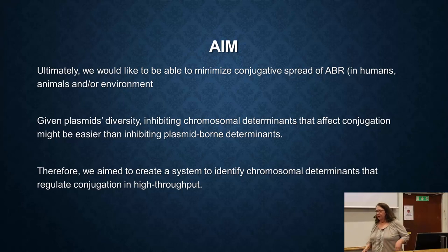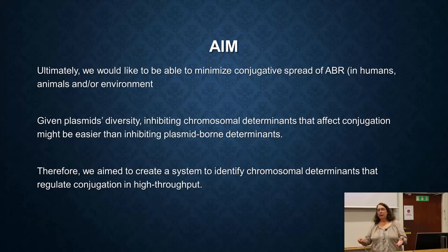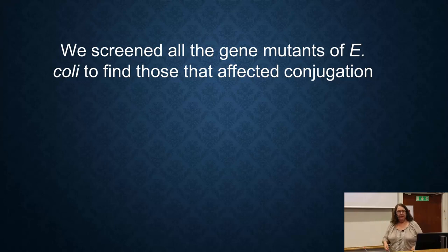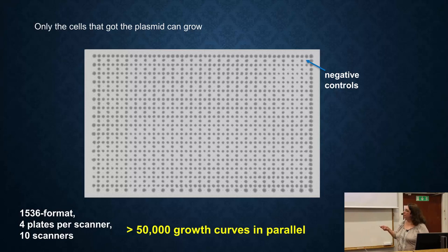Given that plasmids are very diverse, we're focusing our efforts on chromosomal genes in the bacteria. We needed to look at lots of genes and lots of organisms, so we developed a system to quickly assay conjugation. We used it to look at 4,000 mutants of E. coli with four different conjugative plasmids, using agar plates where we can pin 1,536 different conjugation pairs. We screened all of these in a matter of weeks.